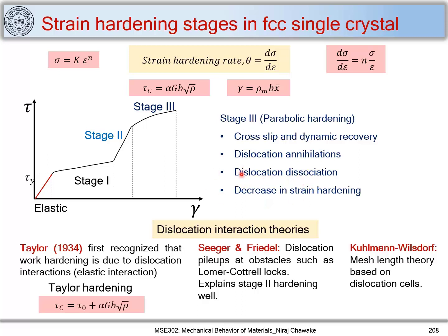Regarding dislocation interaction theories, Taylor proposed that strain hardening or work hardening is due to dislocation interactions. This gives the Taylor hardening equation: tau_c equals tau_0 plus alpha G b times the square root of rho, where tau_0 is the stress required when no dislocations are present.